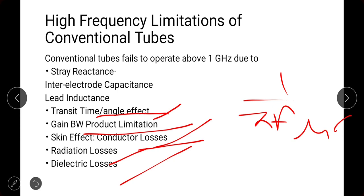The next factor is radiation losses: electromagnetic radiation occurs at higher frequencies. Another factor is dielectric losses, since there is a dielectric material between the plates. These are the limitations of conventional vacuum tubes. In the next lecture we will discuss how these limitations are addressed and what microwave tubes do to perform amplification and oscillation.